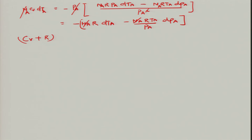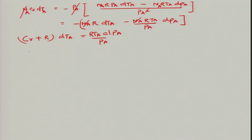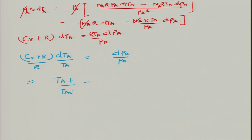Integrating both sides gives: ln(T_AF / T_AI) equals (R / (C_V plus R)) ln(P_AF / P_AI). Therefore, T_AF / T_AI equals (P_AF / P_AI)^(R / (C_V + R)). This is the expression for compartment A. We still need the pressure ratio P_AF / P_AI.